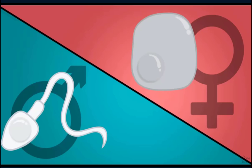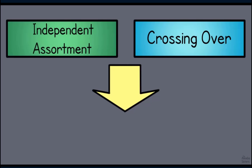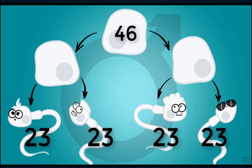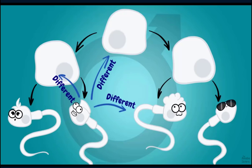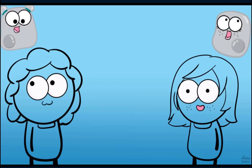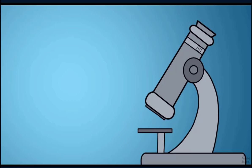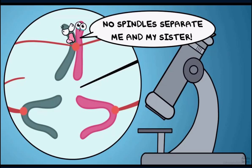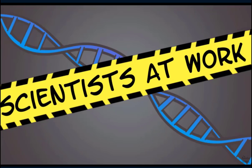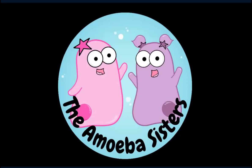Meiosis in males produces sperm cells, and in females it produces egg cells. Because of independent assortment and crossing over, you get variety — for example, the four sperm cells produced each time are all different from each other and different from the starting cell, which had 46 chromosomes while the ending cells only have 23. This is why two siblings with the same parents can look different — they developed from a unique egg and sperm. Scientists also study non-disjunction, when chromosomes don't separate correctly, leading to cells with too many or too few chromosomes, contributing to genetic disorders.